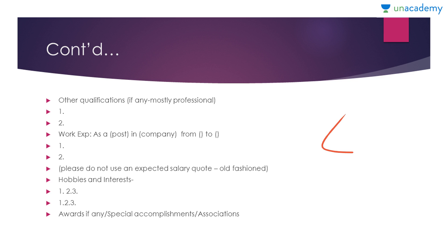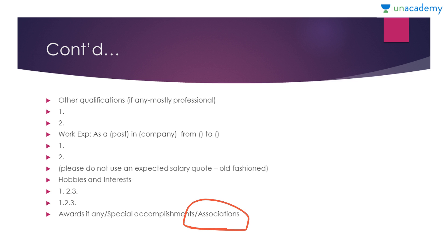If you have received any awards or special accomplishments, they can really make your CV stand out. You should also mention any associations — for example, if you are associated with the Rotary Club, Lions Club, or an animal welfare club — these should be included in your CV.